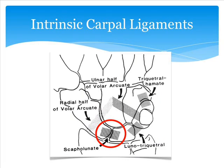Looking first at carpal instability, when we look at the ligaments that are around the wrist, the important ligament for us and most commonly injured is the scapholunate ligament. That ligament goes between the lunate and the scaphoid, and it predominantly involves the dorsal aspect of the ligament between the two bones that has the structural support.